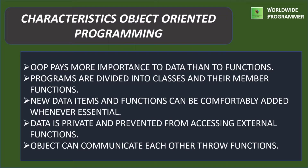Characteristics of object-oriented programming: OOP pays more importance to data than to functions. Programs are divided into classes and their member functions. New data items and functions can be comfortably added whenever essential. Data is private and prevented from being accessed by external functions. And objects can communicate with each other through functions. These are the characteristics of object-oriented programming.